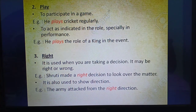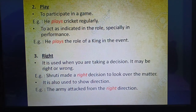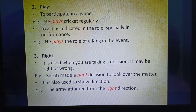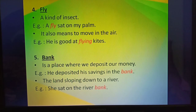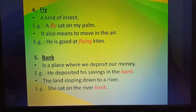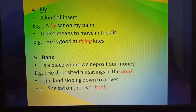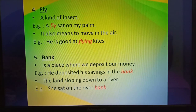Number 3: 'right.' First meaning: used when taking a decision — Shruti made a right decision to look over the matter. Second meaning: used to show direction — the army attacked from the right direction. Number 4: 'fly.' First meaning: a kind of insect — a fly sat on my palm. Second meaning: to move in the air — he is good at flying kites. Number 5: 'bank.' First meaning: a place where we deposit money — he deposited his savings in the bank. Second meaning: the land sloping down to a river — she sat on the river bank.